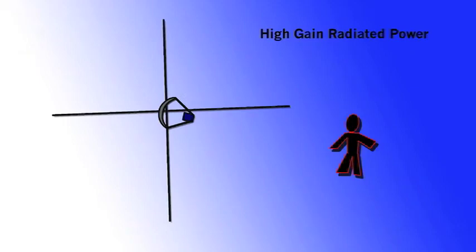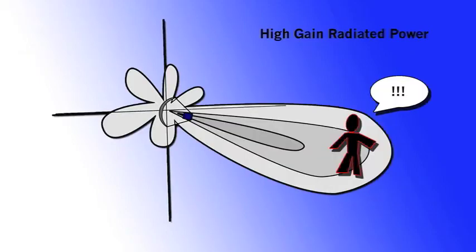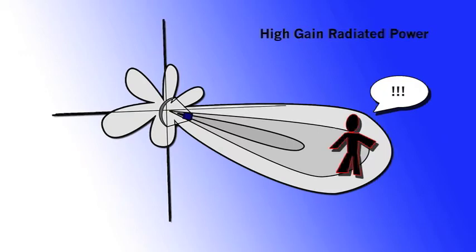To increase the intensity of a signal at a particular spot, higher gain antennas are used to focus the transmission in one particular direction. The gain of antenna describes how well it can send a signal. Higher gain means it is more effective.